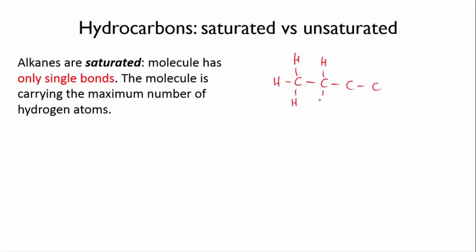Let me draw out butane, C4H10. Now there's no way to attach more hydrogen atoms to this molecule. All possible bonds have been used. So we say the molecule is saturated with hydrogen.